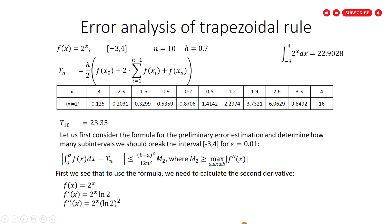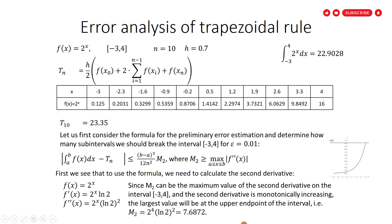Let us plot the second derivative. We see that the maximum value is at the upper endpoint of the interval. We get the maximum value for the second derivative at x equals 4. Just replace x with 4. So the second derivative equals 2^4 multiply ln(2)^2, we get 7.6872. That is the value for M2.